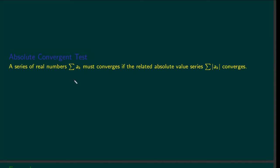We had a lot of tests that were for series of positive or non-negative numbers. With series that have some negative terms, we cannot apply those convergence tests directly. But we can apply those tests to the series made out of the absolute values of the original one. So if that converges, we can conclude that the original one also converges.